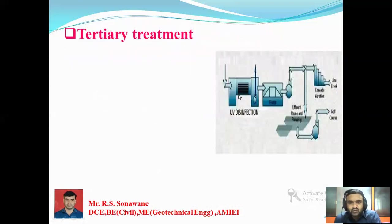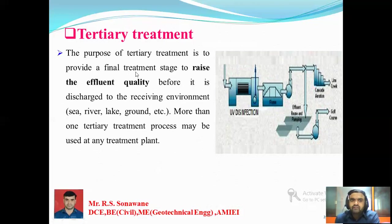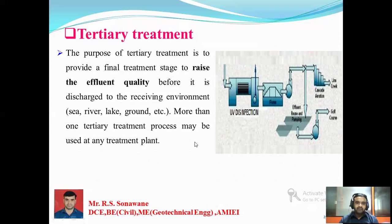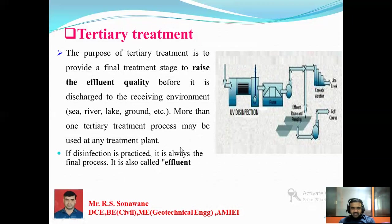In the tertiary treatment plant, this is the disinfection stage. Water comes in from the secondary stage and ultraviolet disinfectant is applied. The purpose of tertiary treatment is to provide a final treatment stage to raise the effluent quality before it is discharged to the receiving environment — such as a river, lake, or groundwater. More than one tertiary treatment process may be used at a treatment plant. The last stage in the sewage treatment plan is to improve the quality of the water before discharge to a river or lake. Disinfection is always the final process, also called effluent polishing.